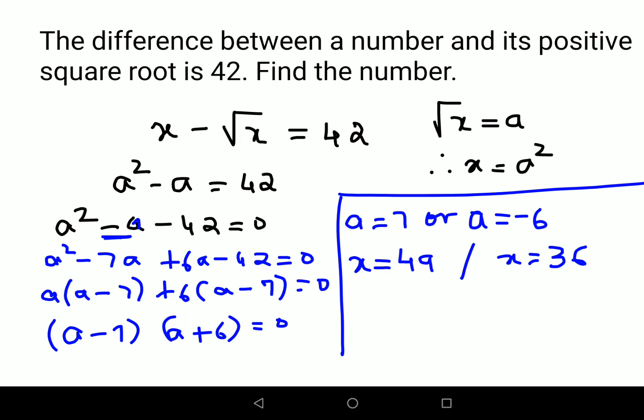Now they are saying the difference between the number, which means x. So here the number is 49 minus its positive square root. The positive square root of 49 is 7, which gets you the answer as 42. So this is correct. The value x = 49 makes this entire question true.